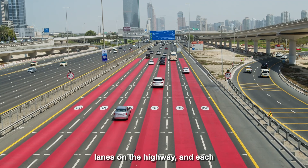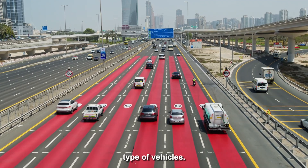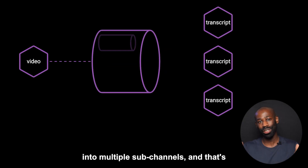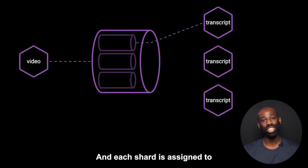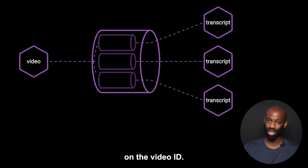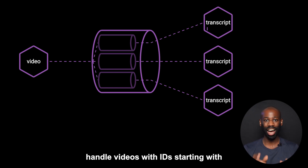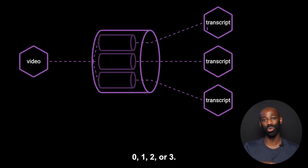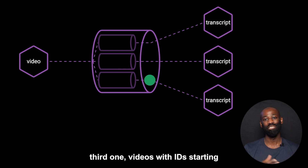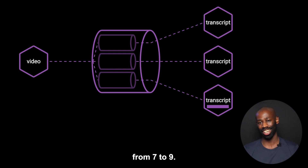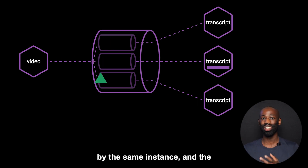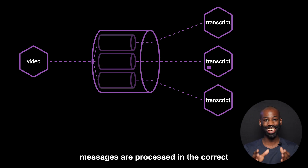Think of sharded channels like lanes on a highway, where each lane is assigned to a specific type of vehicle. The main message channel is split into multiple sub-channels — those are the shards. Each shard is assigned to a specific consumer instance, and messages are routed to a shard based on the video ID. For example, shard one could handle videos with IDs starting with 0, 1, 2, or 3. The second shard could handle videos from 4 to 6, and the third one, videos with IDs starting from 7 to 9. This setup ensures that all messages for a given video are processed by the same instance, and the messages are processed in the correct order.